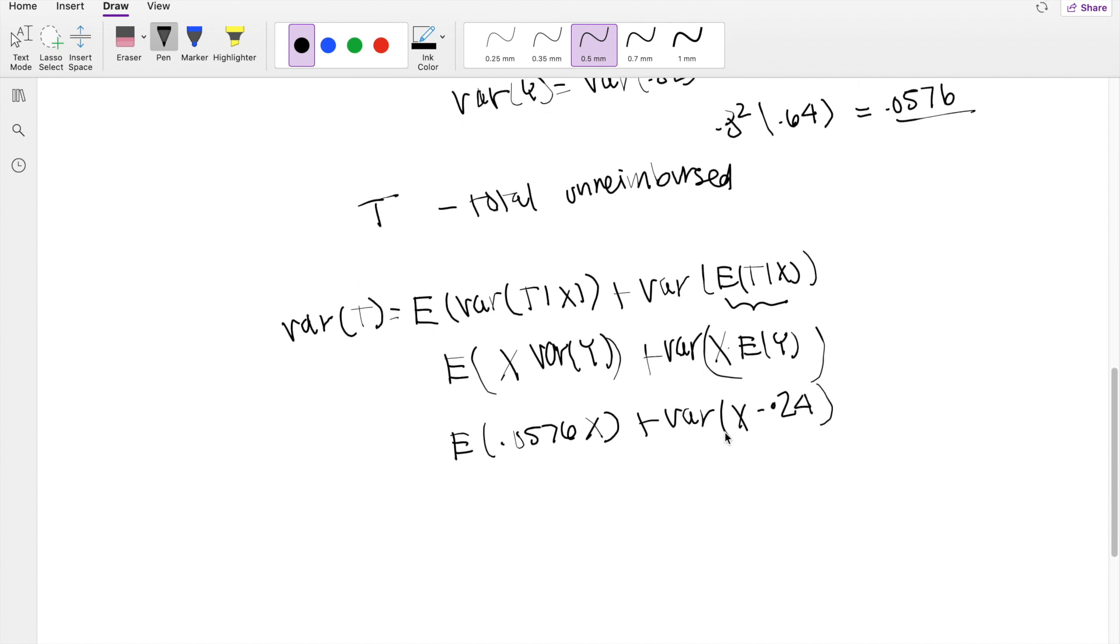When you take out the 0.24, it just becomes 0.24 squared because this is in the variance world and we have to bring it back to the regular people world. Variance of X plus, same thing, but when I take this one out, it just becomes a constant.